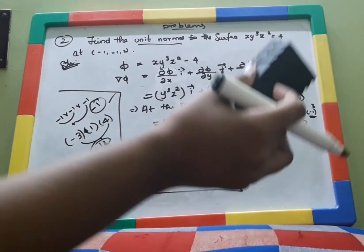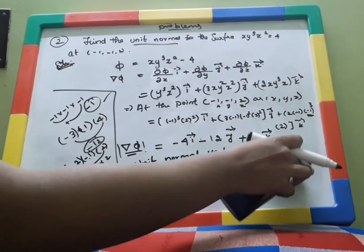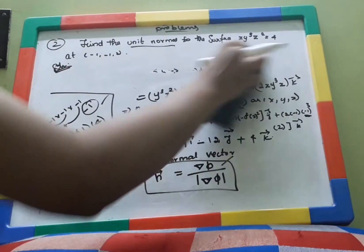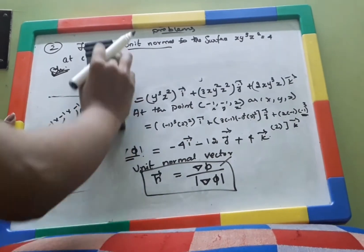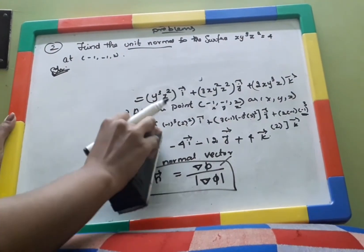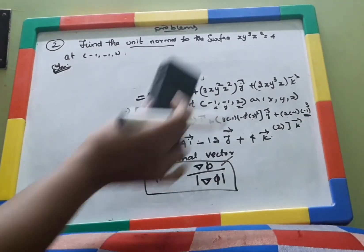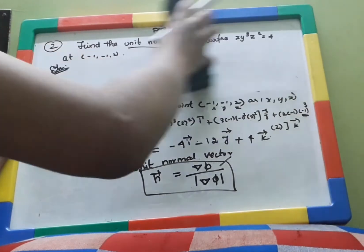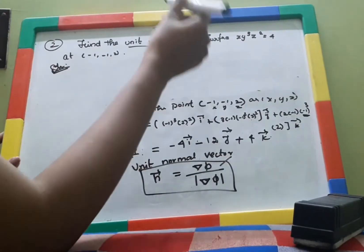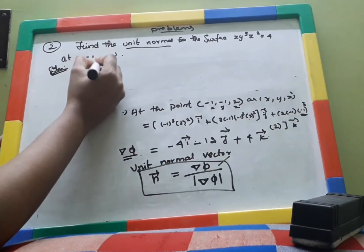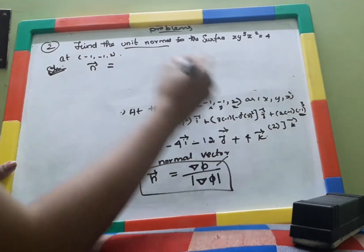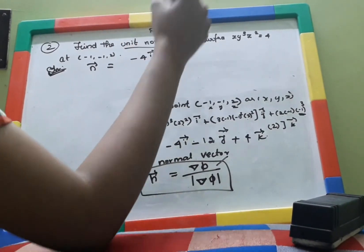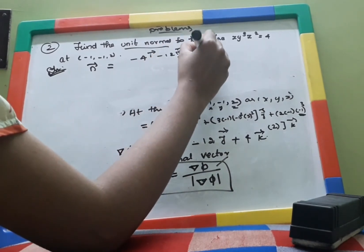The unit normal vector is the vector that passes through the point where the line touches the surface — it gives the direction of intersection. So n̂ = del ψ / |del ψ| = (−4î − 12ĵ + 4k̂) / |del ψ|.